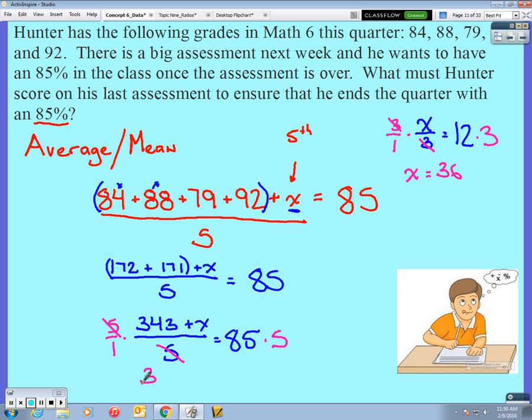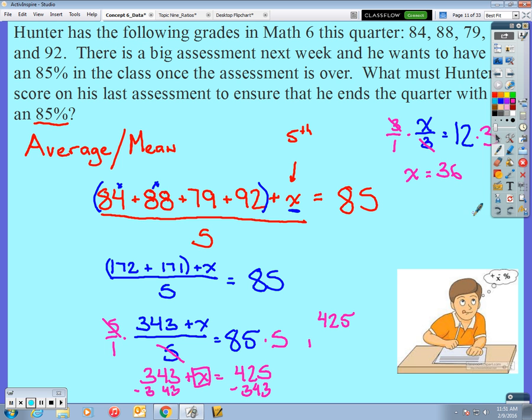Cancels out with cross reduction. So now we have 343 plus X is equal to 425. Now I want to isolate this X. We have addition, so to undo addition, we subtract. So I'll subtract 343 from both sides. Minus 343.